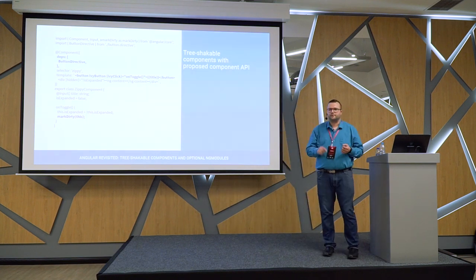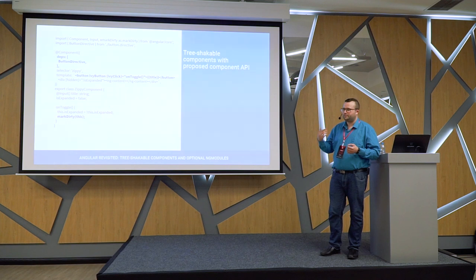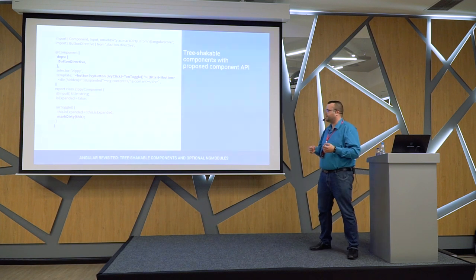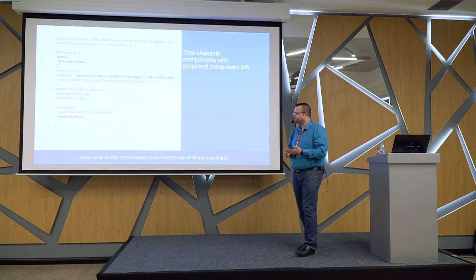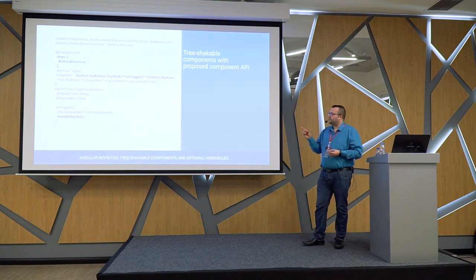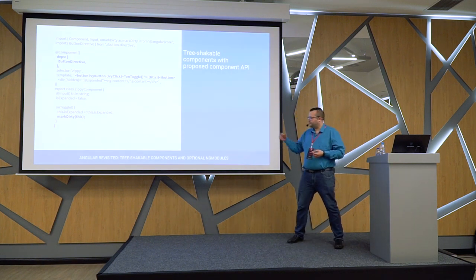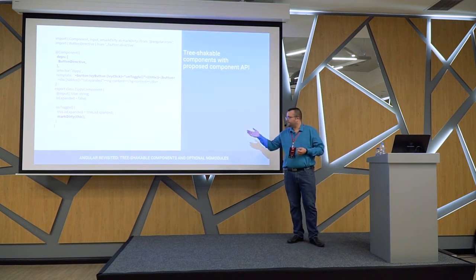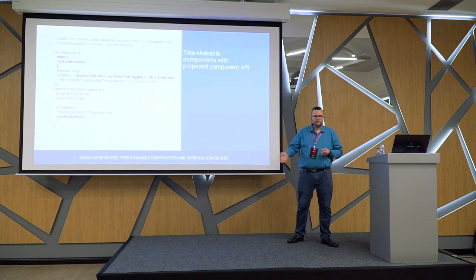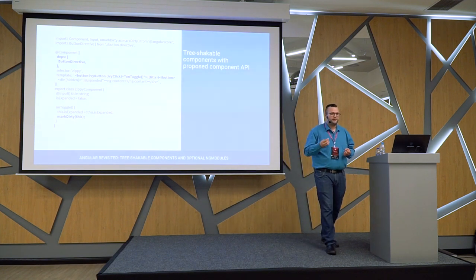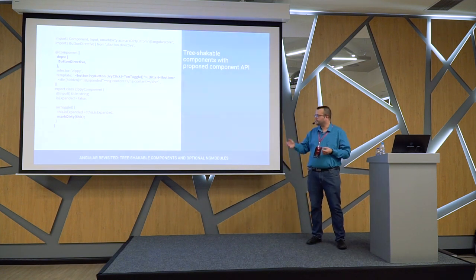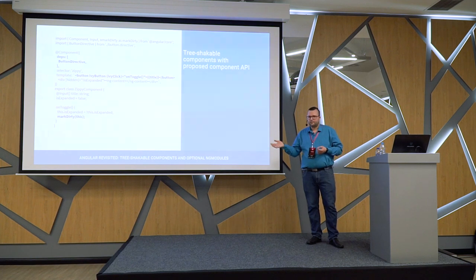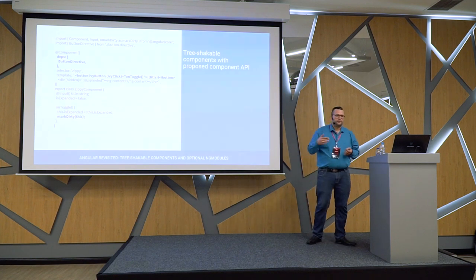So in this template here, we see the IV button directive and the IV click event that comes with that — just a simple button directive. To use that and link it into the template, we have to list it up there in the deps property. And deps is short for declarable dependencies, which means components, directives, and pipes. And since we don't have modules, we have to remember to use the markDirty function for managing change detection — every time we change local UI state, we have to call markDirty on the component.